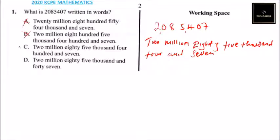If you check the other one, two million eighty-five thousand and forty-seven, it's not forty-seven but four hundred and seven. So the correct answer is B, and that is the answer you shade on your answer sheet.